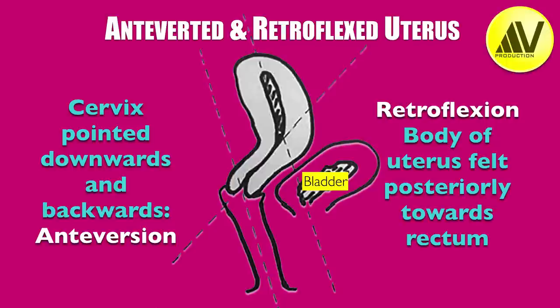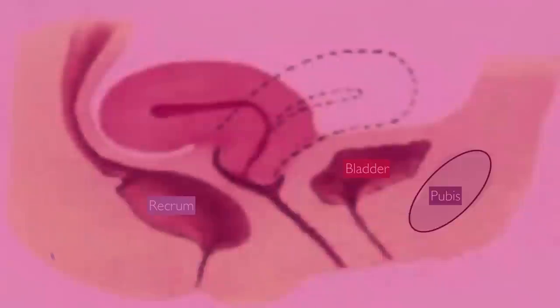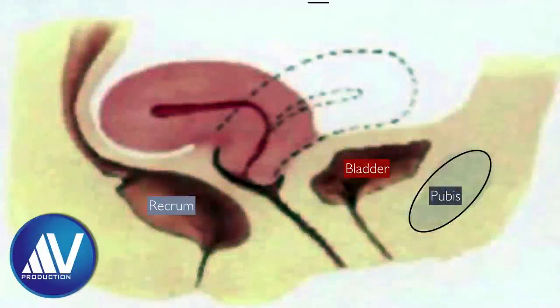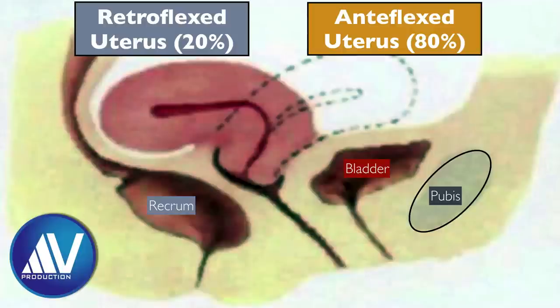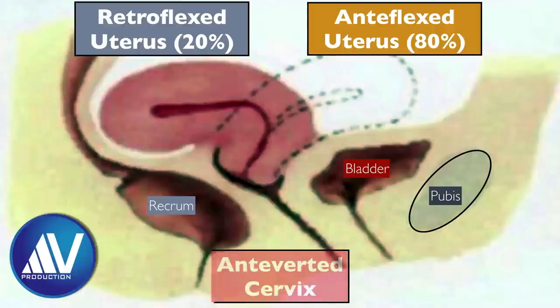This is an uncommon combination of the position of the uterus. This diagram shows the difference between antiflexion and retroflexion. When the body of the uterus is felt on bimanual examination towards the bladder, it is called antiflexion, and when it is felt towards the rectum, it is called a retroflexed uterus. The uterus is antiflexed in about 80% of normal women and retroflexed in about 20% of women. Note that the cervix is pointed downwards and backwards — that is, in the antiverted position — in both these flexion positions of the uterus.